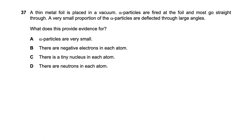Question thirty-seven: alpha particles are fired at a thin metal foil. Most go straight through and a very small proportion are deflected through large angles. We eliminate options about neutrons and electrons, as electrons are too weak to deflect alpha particles. The result provides evidence that there is a tiny, positively charged nucleus in each atom — so option C is the right answer.